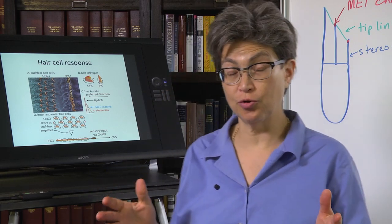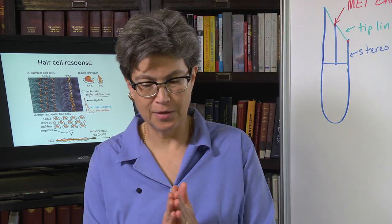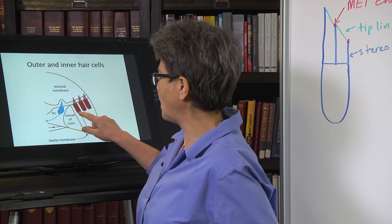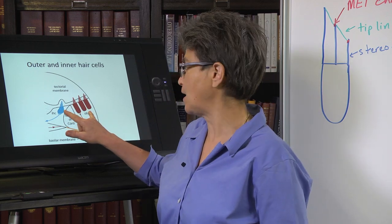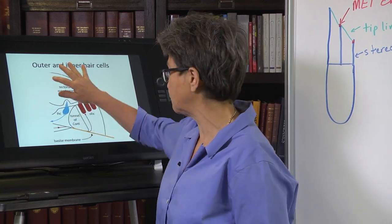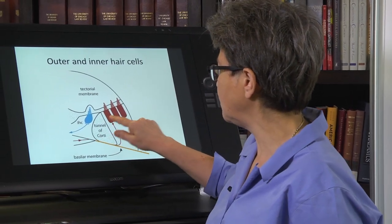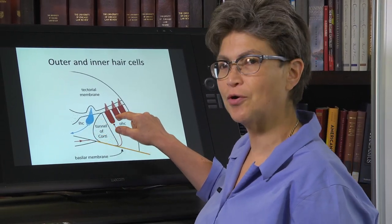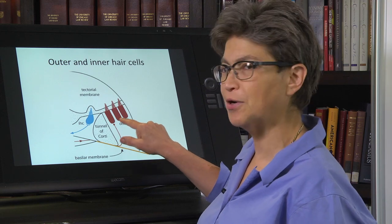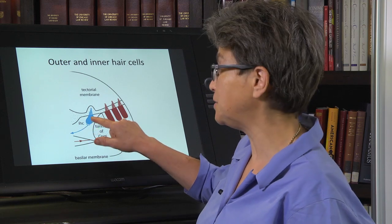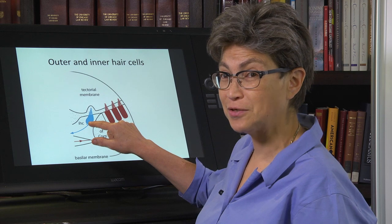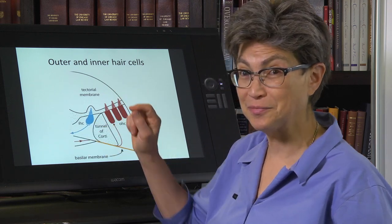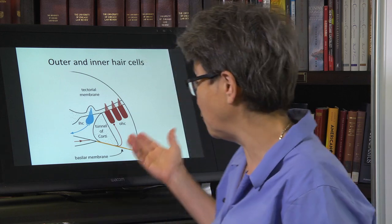So now we're going to talk about the cochlear amplifier. Where we left off, we have two sets of hair cells in the cochlear duct. Remember this is the cochlear duct here, the outer hair cells, here's the inner hair cells. Even though there are roughly three times as many outer hair cells than inner hair cells, it's only the inner hair cells that send information into the central nervous system. So what's up with all these outer hair cells? What are they doing?